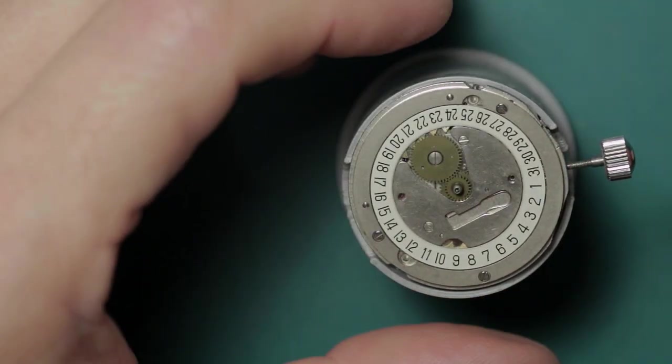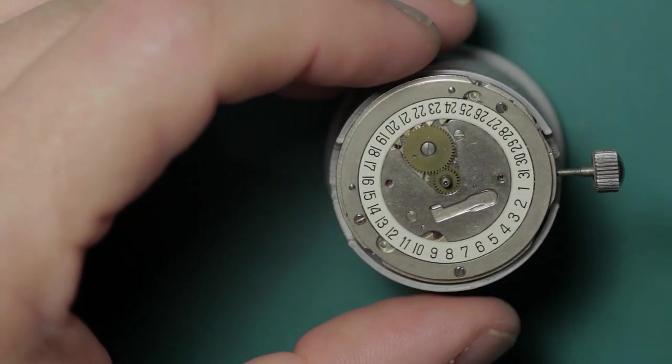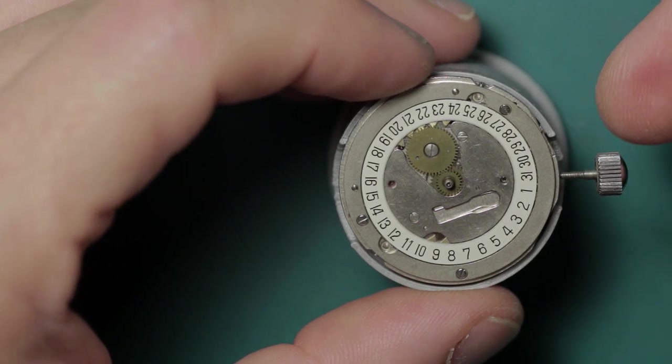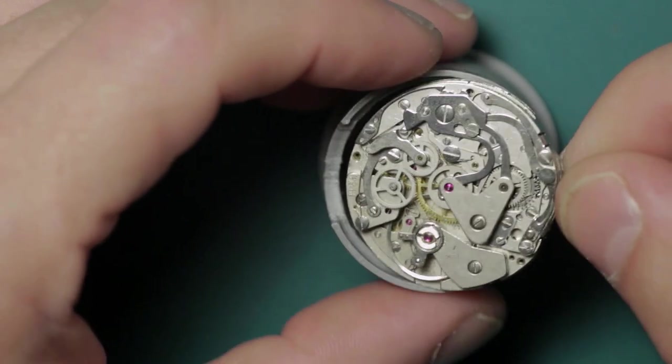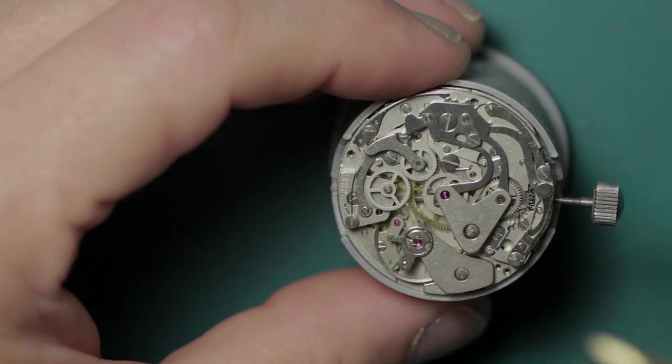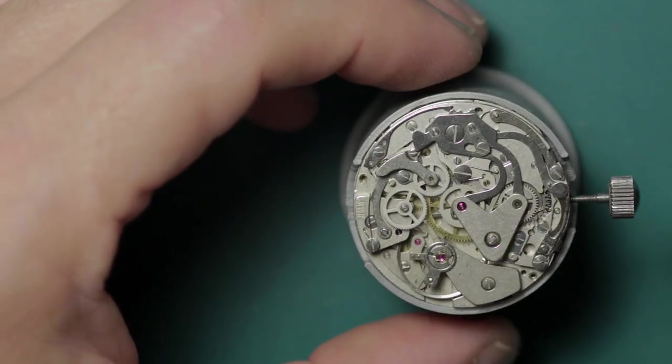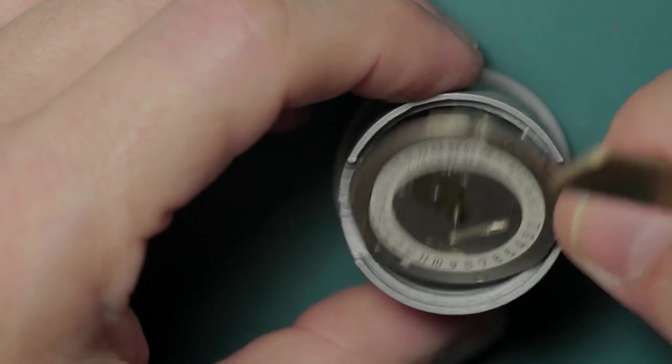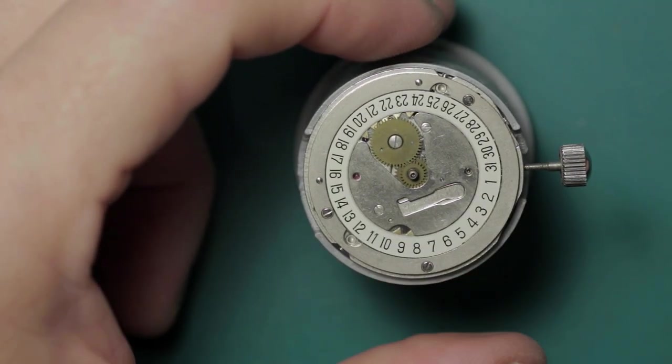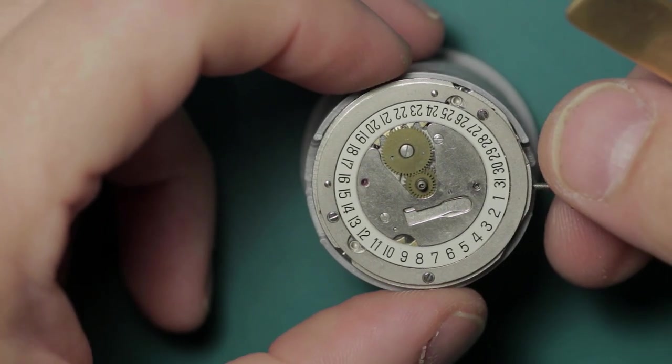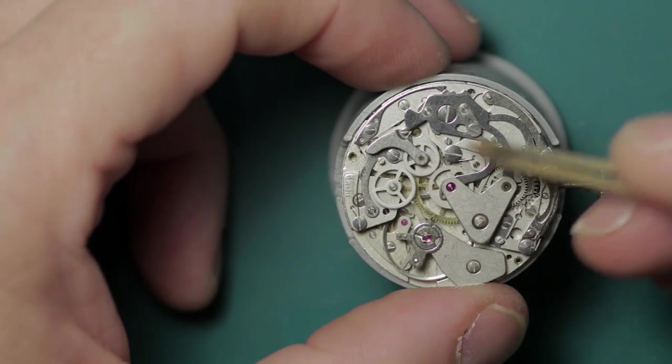When Valjoux made the 7750, which is very well renowned in terms of chronograph movements and used in many different manufacturers' chronographs, they sold all the tooling and bits and pieces to Poljot, who then produced their own variant as the 3133.